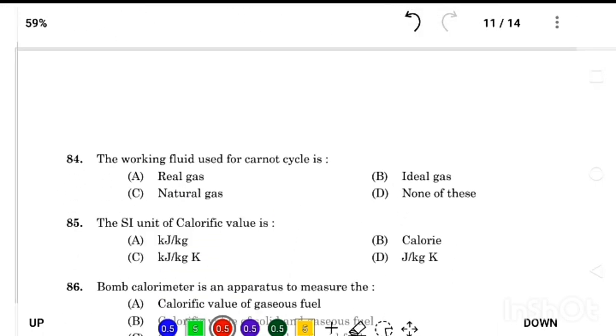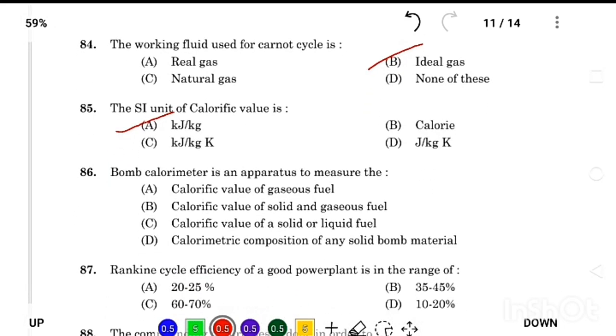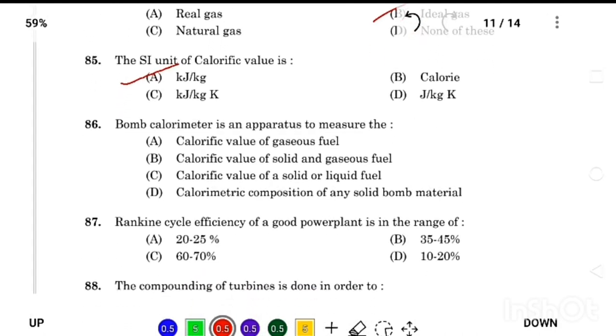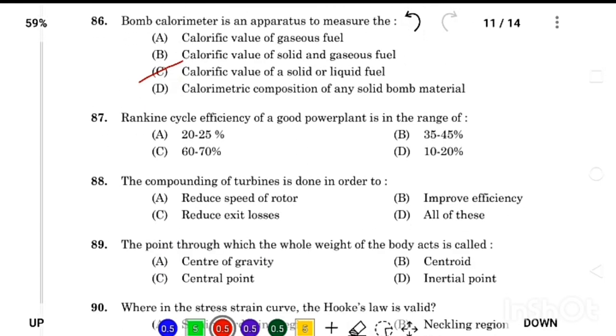The working fluid used for a Carnot cycle is Answer Option B, ideal gas. The SI unit of calorific value is Answer Option A, kJ by kg. Bomb calorimeter is an apparatus to measure the Answer Option C, calorific value of solid or liquid fuel.